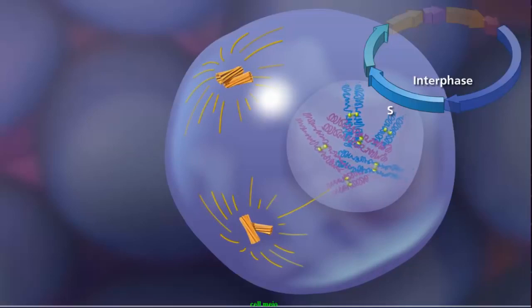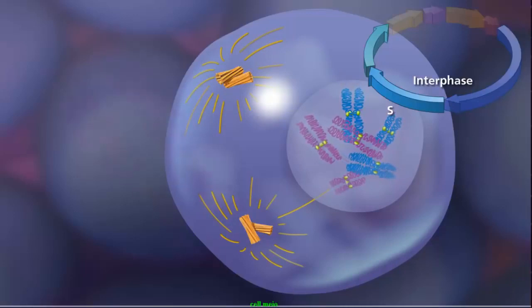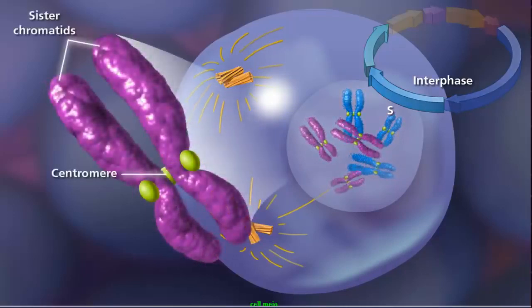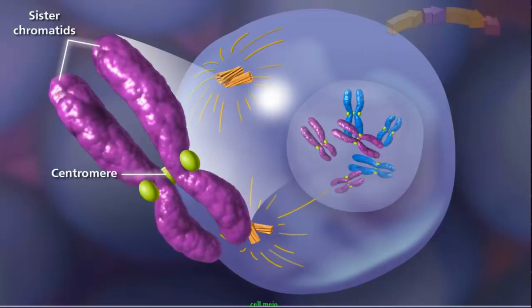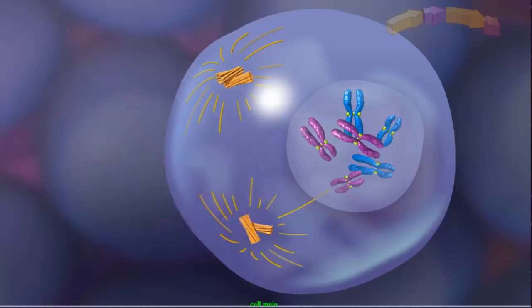Sister chromatids remain attached at the centromere and condense as the cell enters prophase I of meiosis. Up to this point, the cell looks similar to mitosis, but two events occur in meiosis that do not occur in mitosis and lead to genetic diversity.